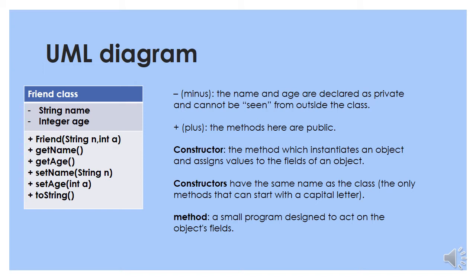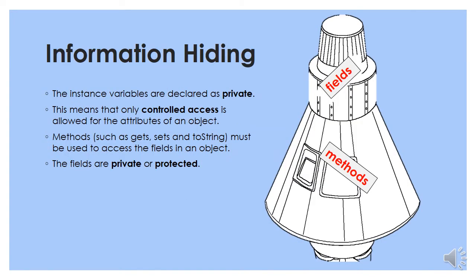A method is just a small program designed to act on the object's fields. What does information hiding mean? The instance variables are declared as private, and this means that access to them is controlled. You can only access them through the methods — methods like the getters, setters, and toString must be used to access the fields in the object. So the information is hidden. The fields are declared as private, or protected if you are using inheritance.